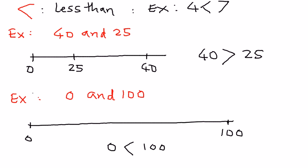So 0 is less than 100, and that is how we place the correct inequality symbol using this number line approach. In my next presentation, we shall see how to represent whole numbers using a place value chart.